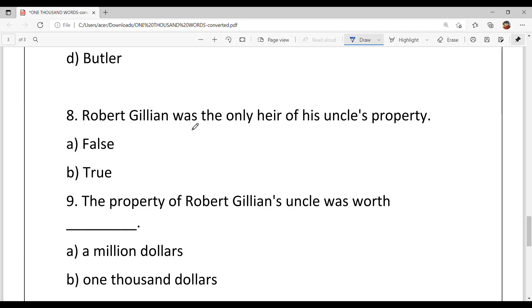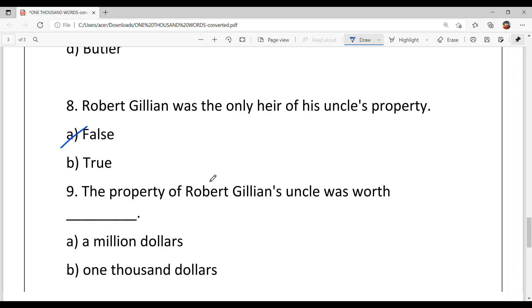Eighth is, Robert Gillian was the only heir of his uncle's property. Option A, false, he was not.